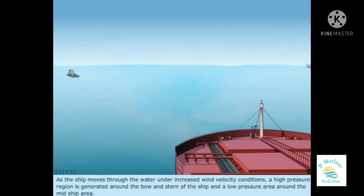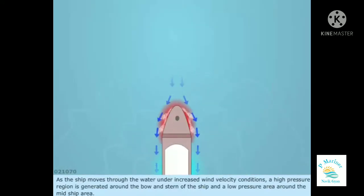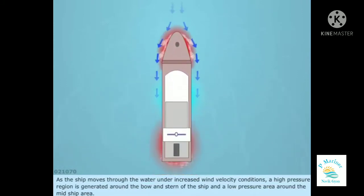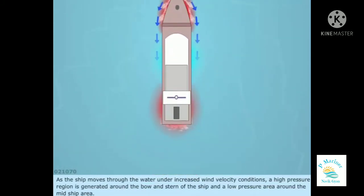As the ship moves through the water under increased wind velocity conditions, a high pressure region is generated around the bow and stern of the ship, and a low pressure area around the midship area.